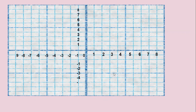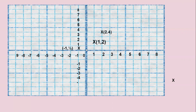Next we will draw the graph for this. We take a graph sheet and plot some points. We have taken the scale as 1 cm equals 1 unit. The point (2, 4) means x is 2, y is 4. The point (1, 2) means x is 1, y is 2. When x is minus 1, y is half. When x is 0, y is 1. When we join all these points, we will get a curve.